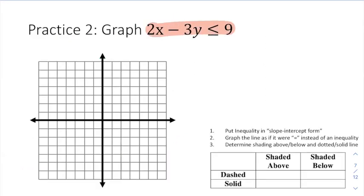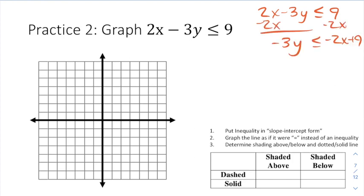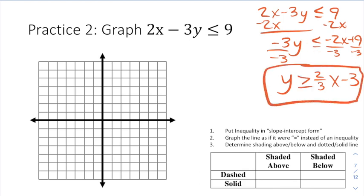Next, let's look at a problem that starts off in standard form rather than slope-intercept form. Just like we would with an equation, we're going to have to move this into slope-intercept form. So I'm going to start by moving over the x-term, subtracting 2x. Then I'm going to divide by negative 3. Now don't forget, we're dividing by a negative with an inequality, which means we're going to have to flip the inequality sign.